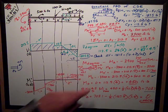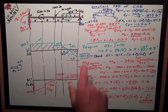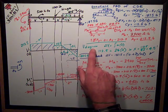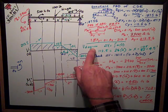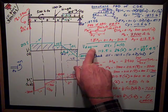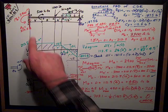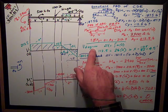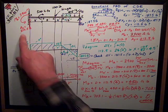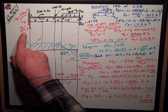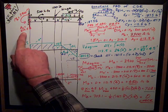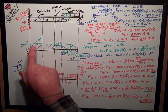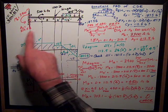Now I'm ready to draw my shear diagram. Concentrated force causes my shear diagram to jump in that direction by the amount of that force. So this support reaction counts as a concentrated force so the shear diagram jumps up to 212.5.